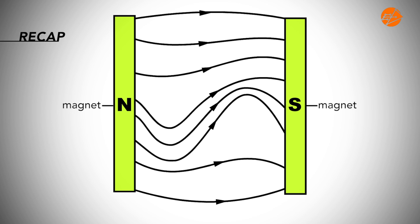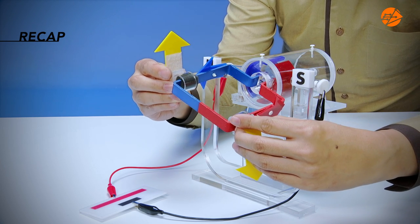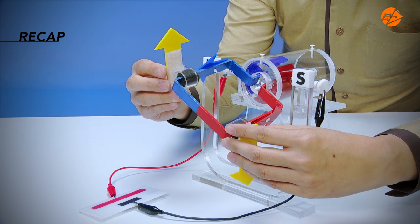Can you recall how the magnetic fields from the current carrying coil and the permanent magnets interact? As the resultant magnetic forces act from the stronger to weaker magnetic field regions, the turning effect of the coil in the DC motor is produced and causes the coil to turn.